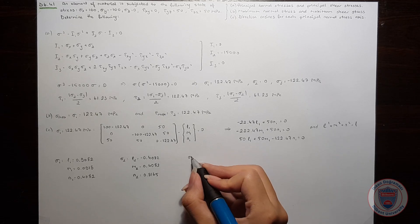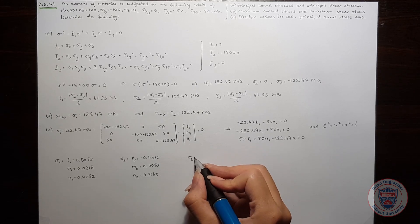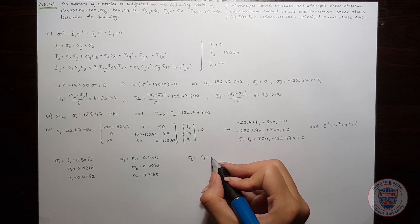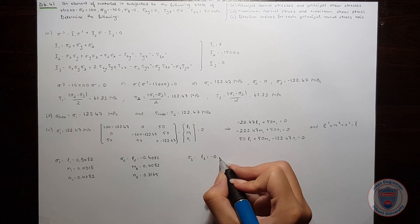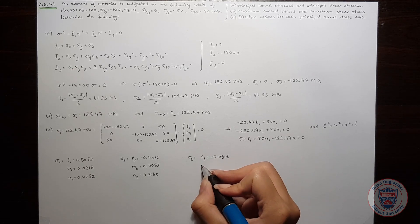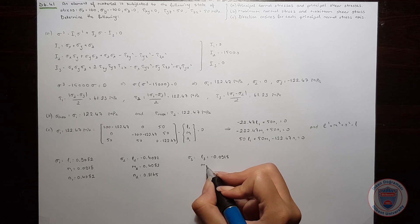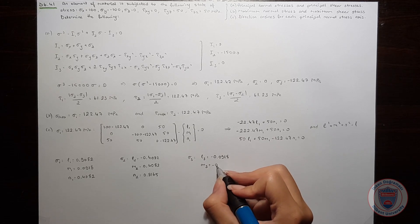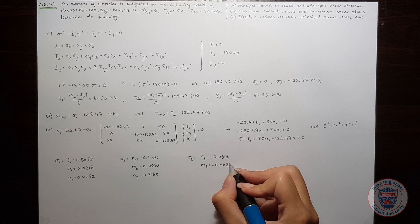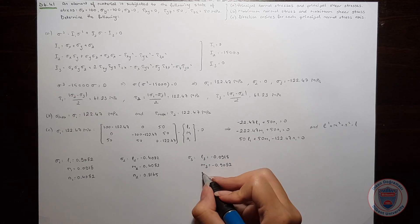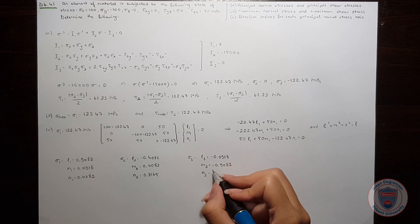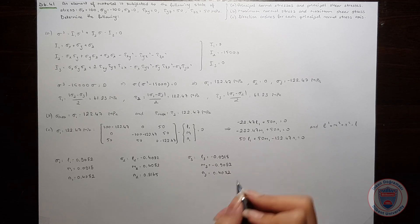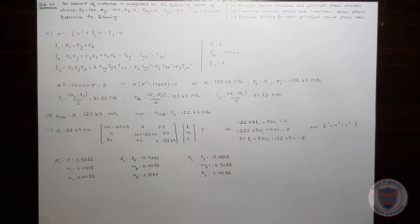And finally, for sigma_3: L3 equals minus 0.0918, M3 equals minus 0.982, and N3 equals 0.482, and that is all.